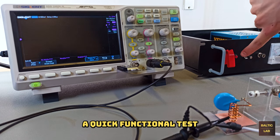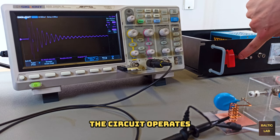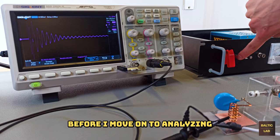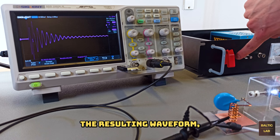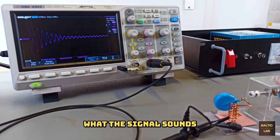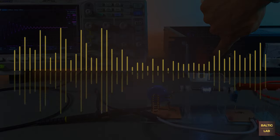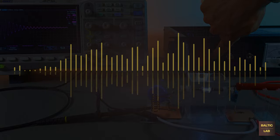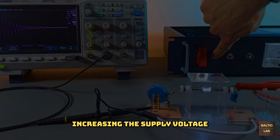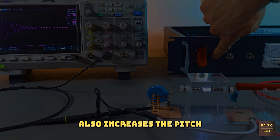A quick functional test confirms that the circuit operates as intended. Before I move on to analyzing the resulting waveform, let's listen to what the signal sounds like on an AM receiver. Increasing the supply voltage also increases the pitch of the received tone.